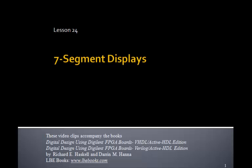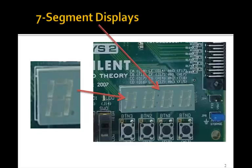This is lesson 24 on seven-segment displays. The Nexus 2 board and the basis board have four seven-segment displays shown here. Here's a blow-up of them. Each seven-segment display has seven of these LEDs around here, plus a decimal point.